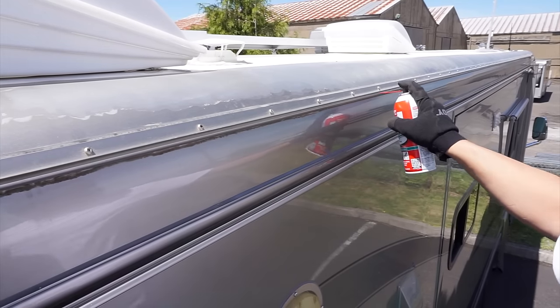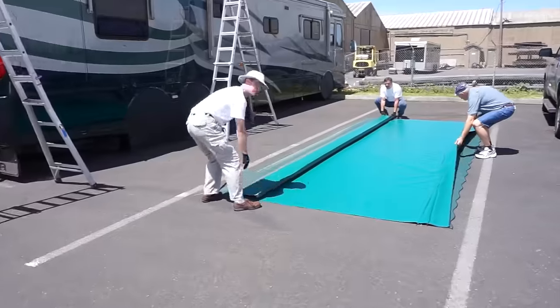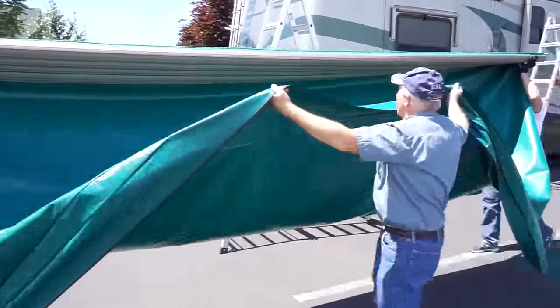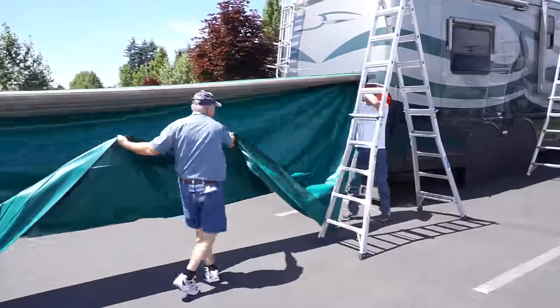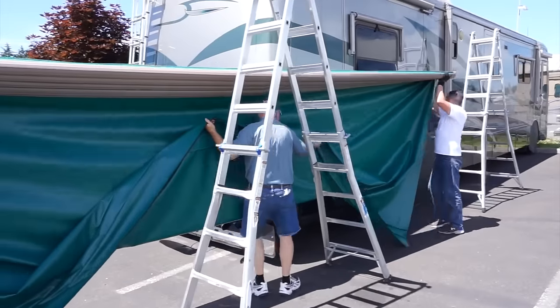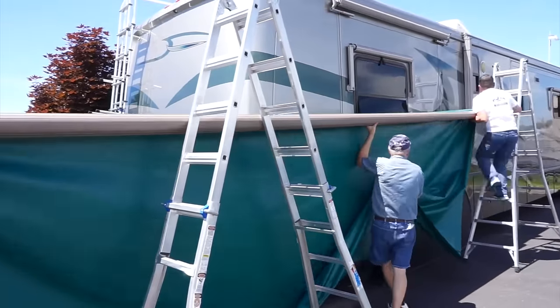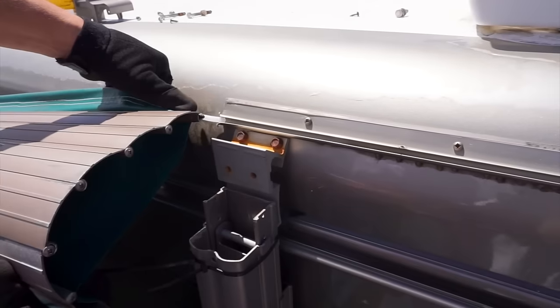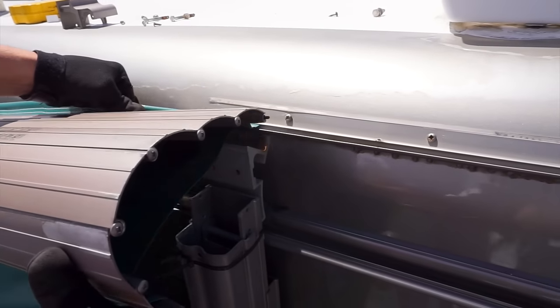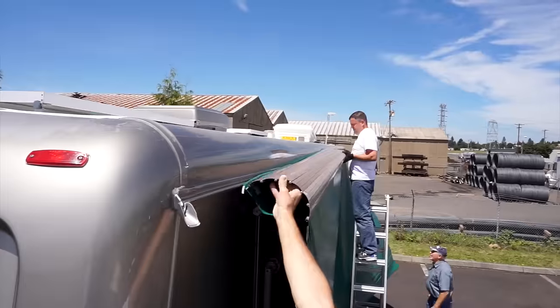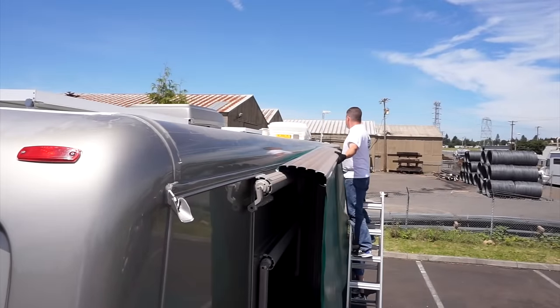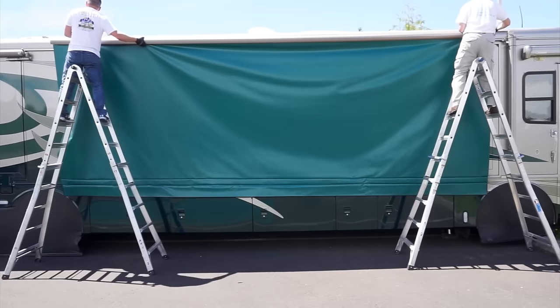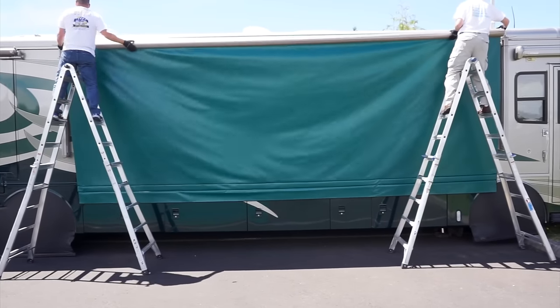Lubricate the track on the RV, and now it's time to install the new awning. Start the bead into the track and slide it all the way in, then center it between the two awning arms.